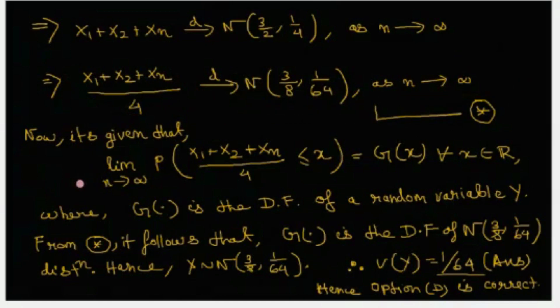Now it is given that probability that (x1 plus x2 plus xn)/4 less than or equal to x equals g(x) for all x as n tends to infinity, where g is the distribution function of a random variable y. Now from the previous result we can see that this quantity has the asymptotic distribution of normal 3/8, 1/64.